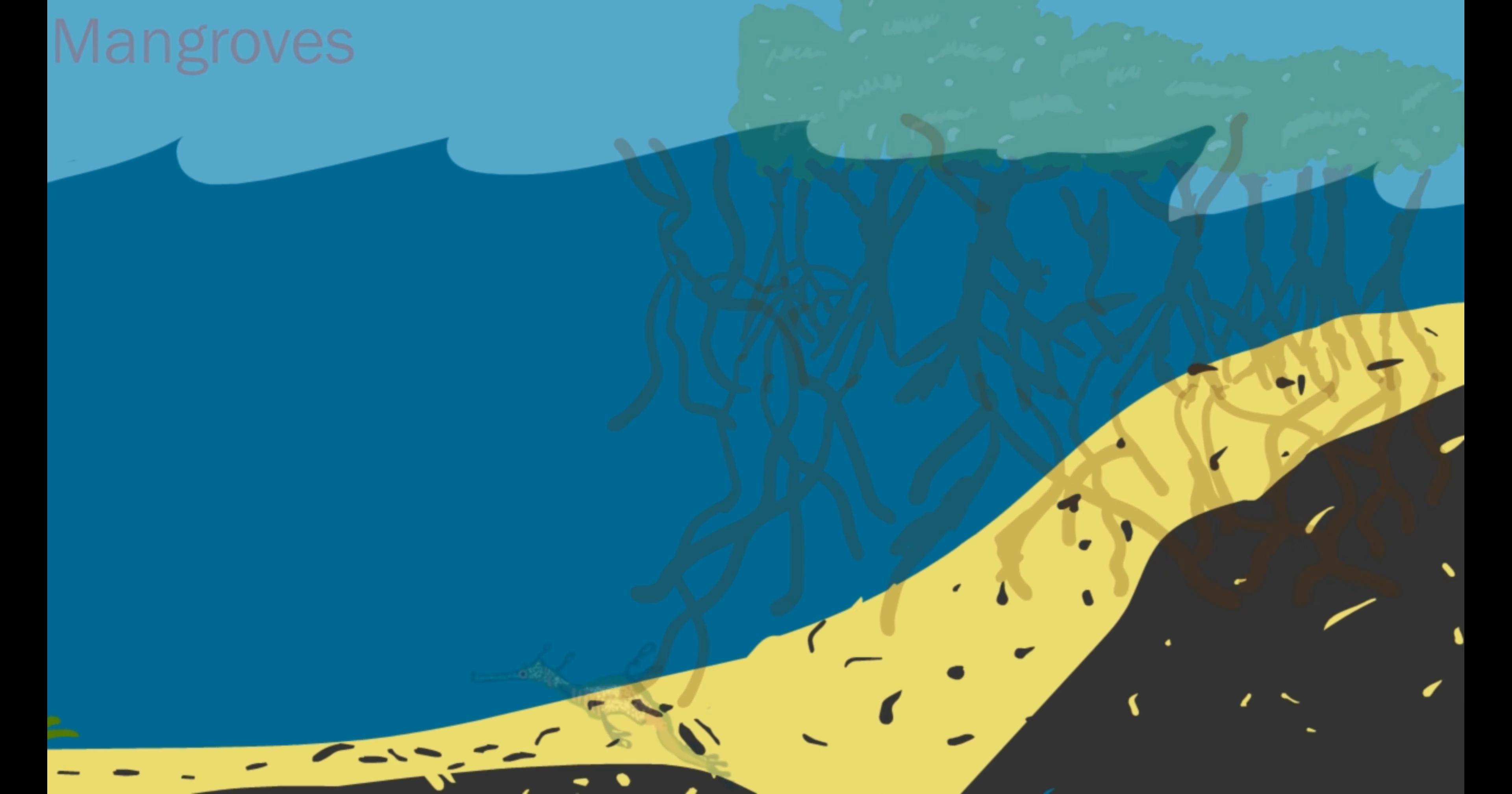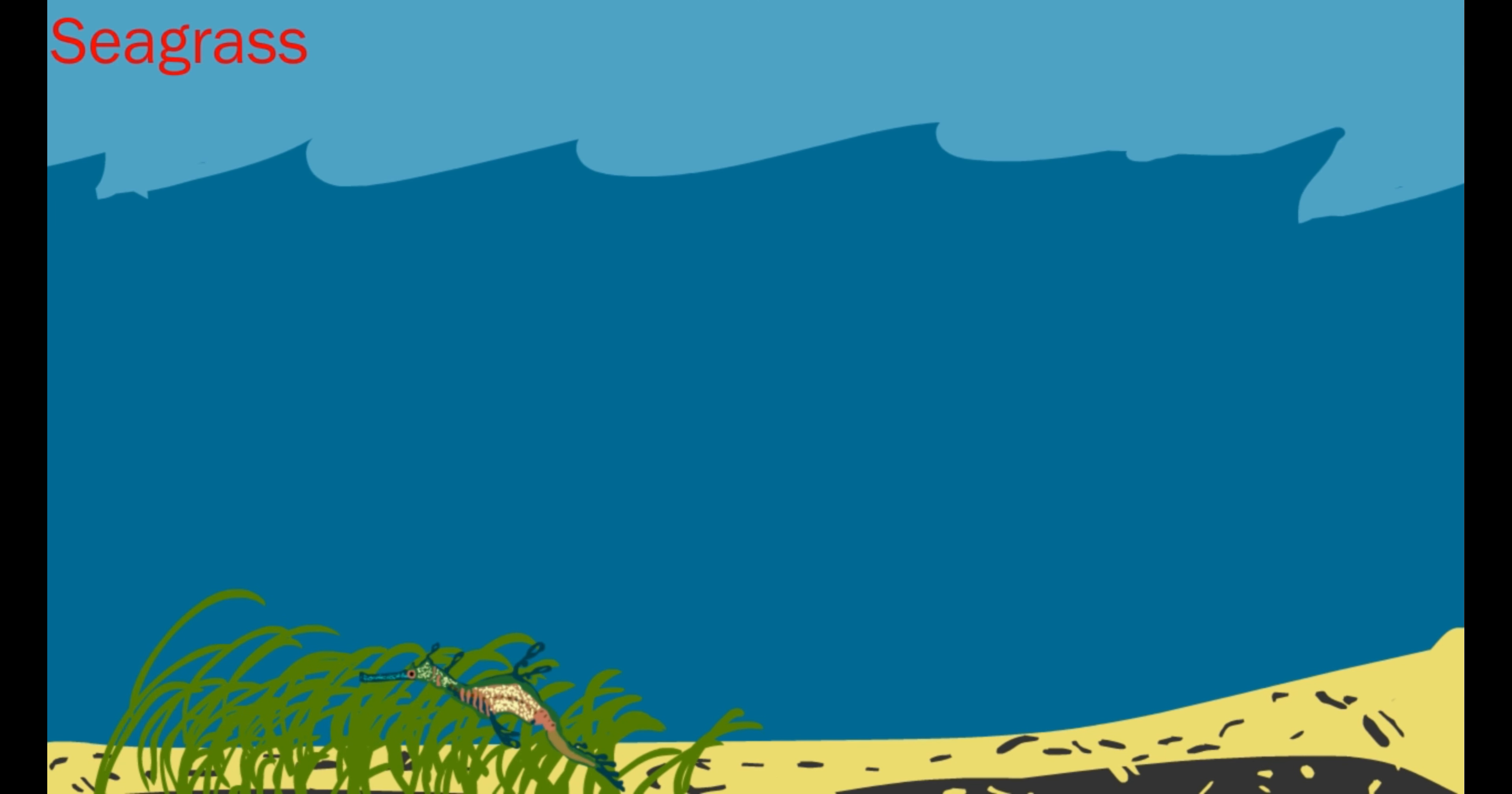Mangroves and other plants, like seagrasses, use their roots to make the bay floor more solid. Seagrasses also provide hiding places for smaller animals, like the weedy sea dragon.